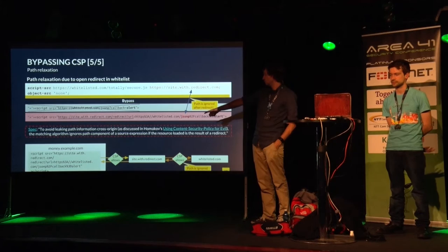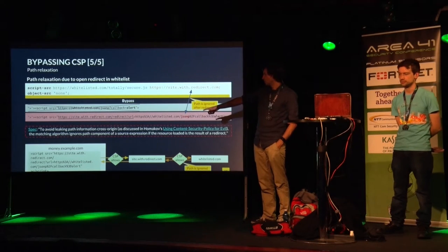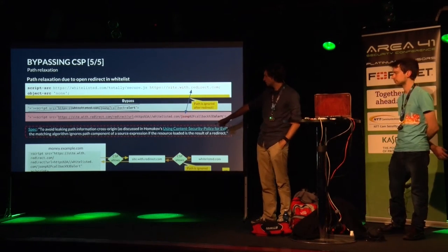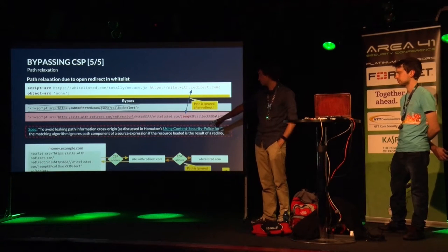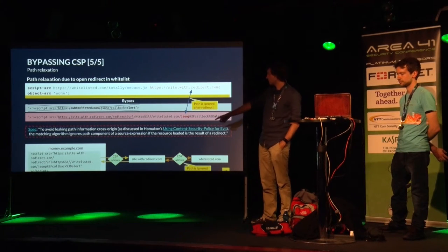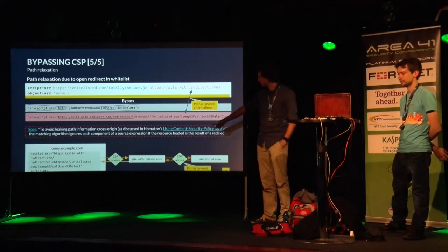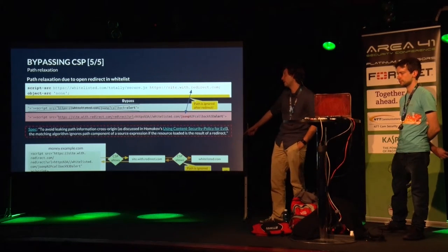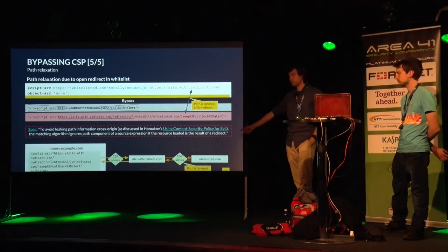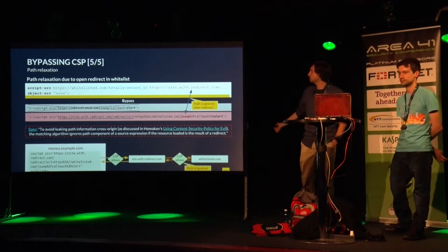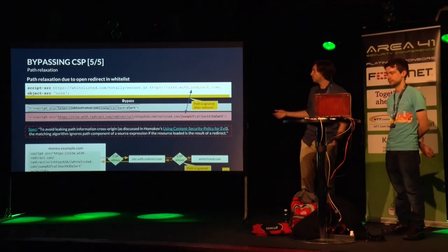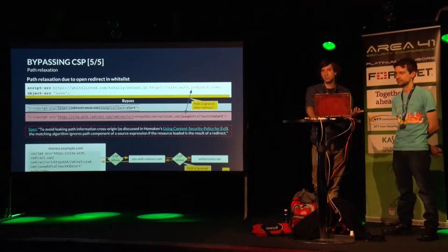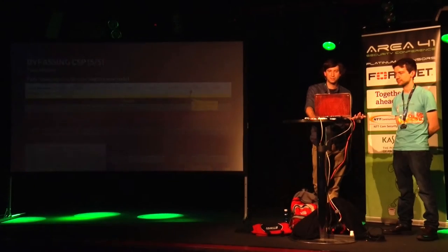So what happens: money.example.com sources the script for the redirect. CSP says 'site-with-redirect.com is whitelisted, so I allow that.' Then there's a redirect. CSP says 'whitelisted.com is allowed' - and fully ignores the path - and it will ship back the response from the JSONP and you can execute JavaScript again. Basically a fully bypassed policy.